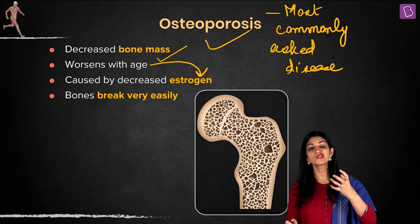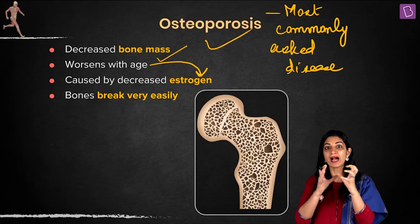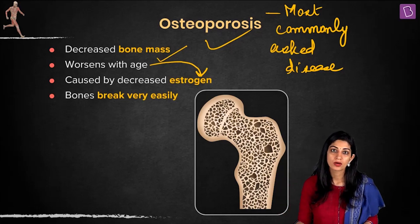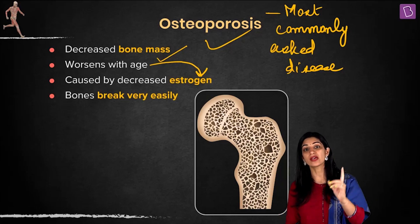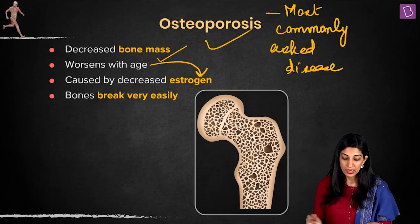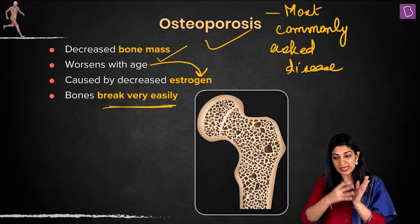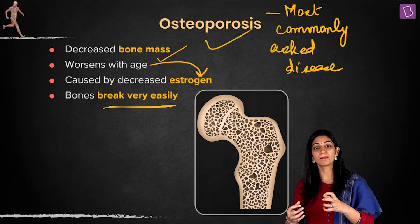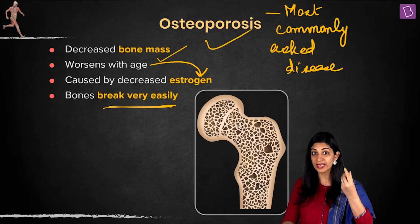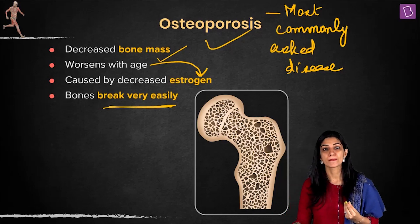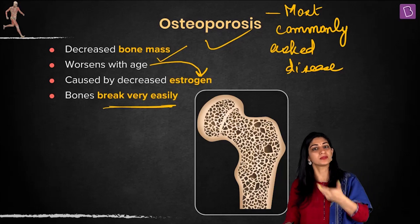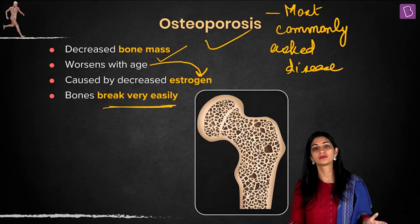Osteoporosis is therefore both hormonal and age-related. That is why women are advised to take care of their bone health. As women age, their bones weaken because bone density is decreasing — they can fall and their bones will simply fracture.